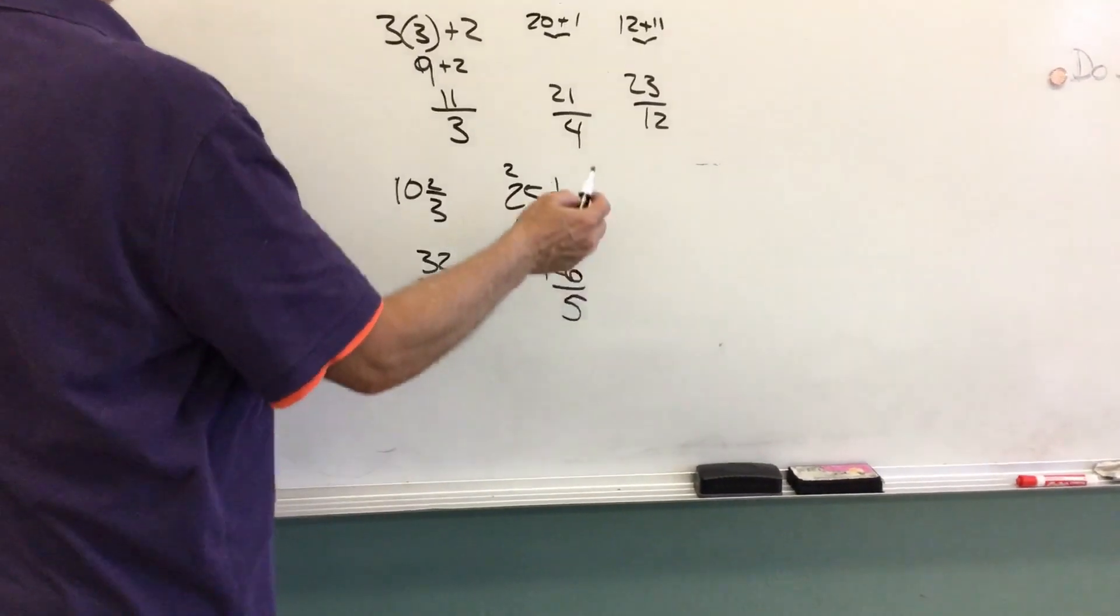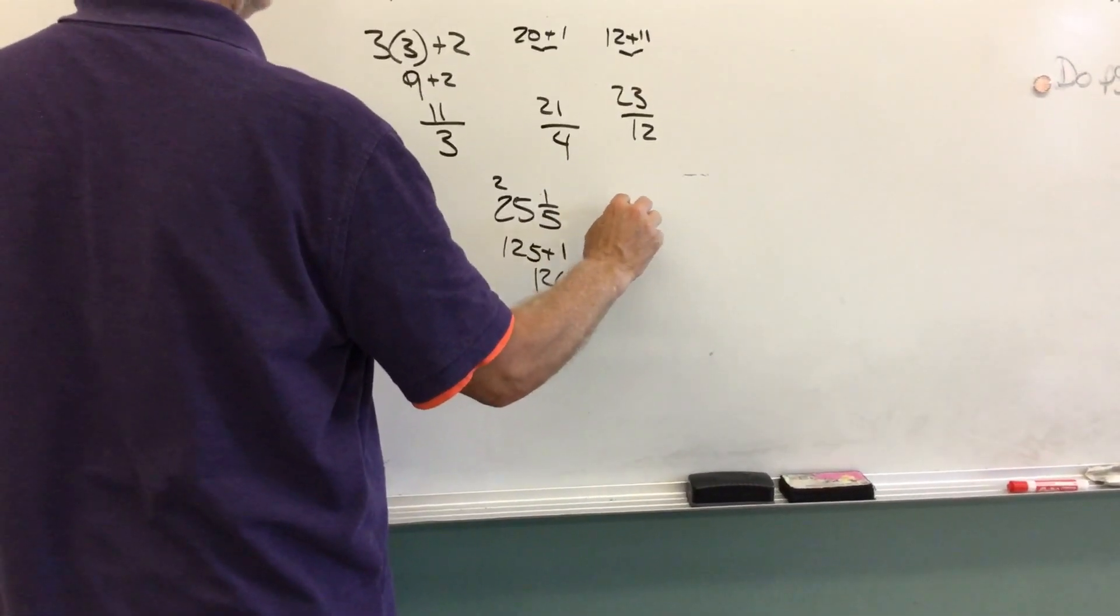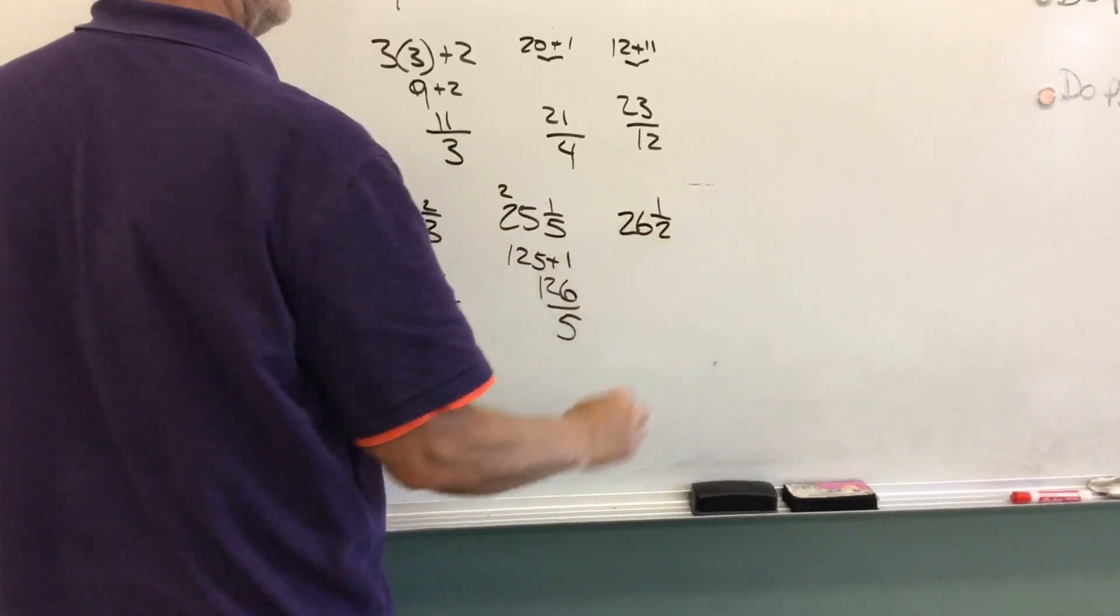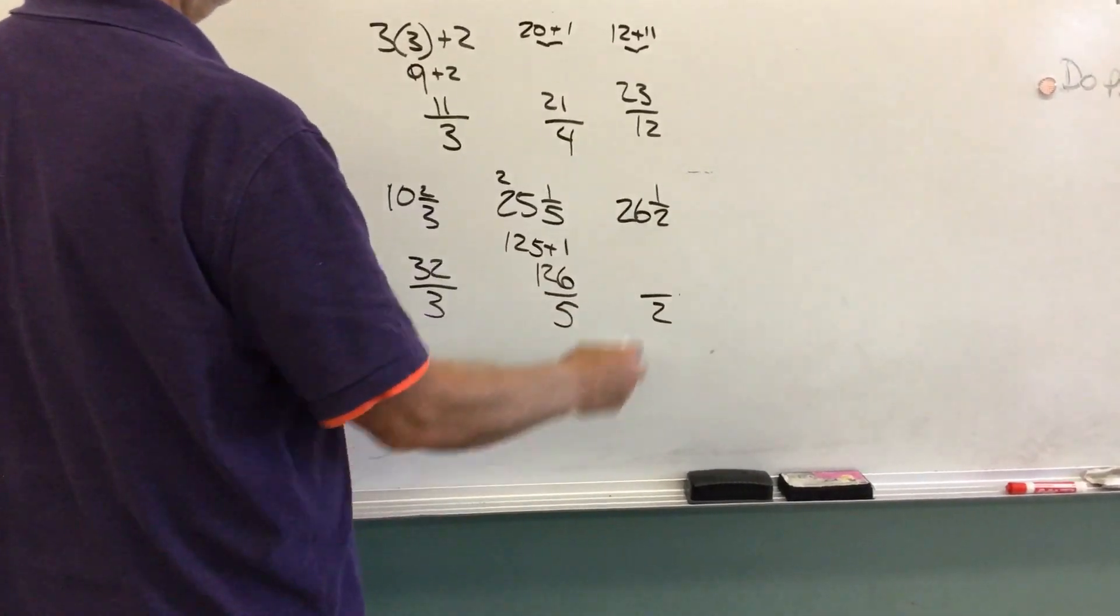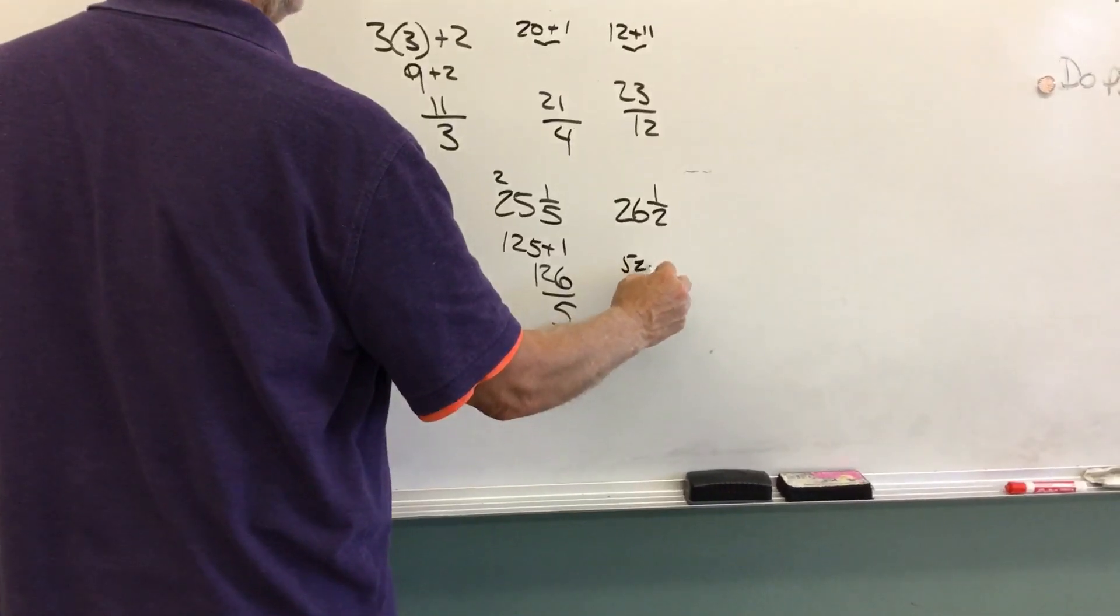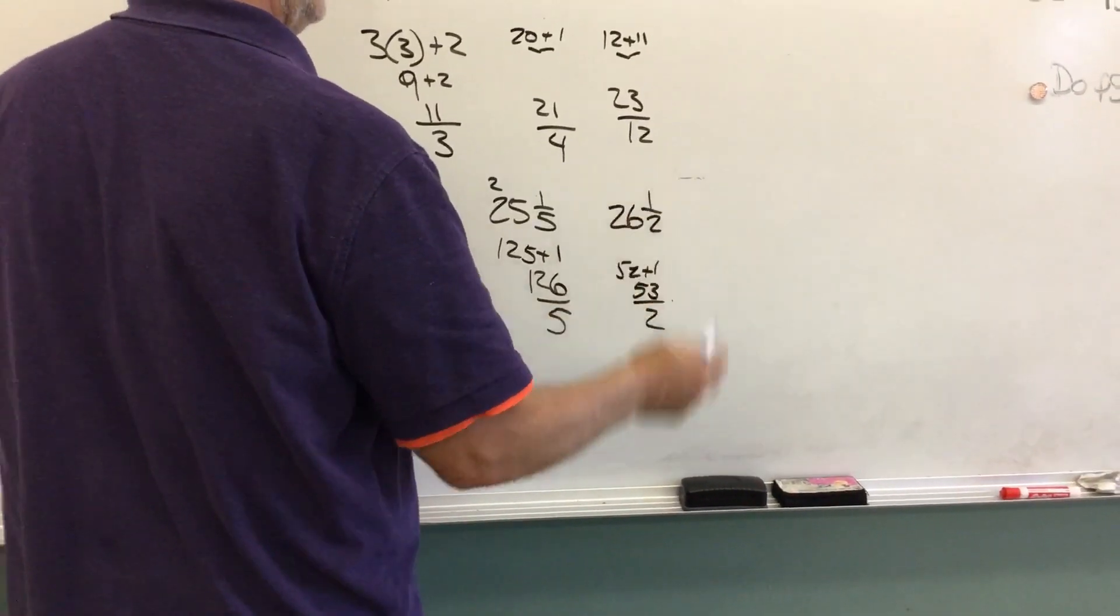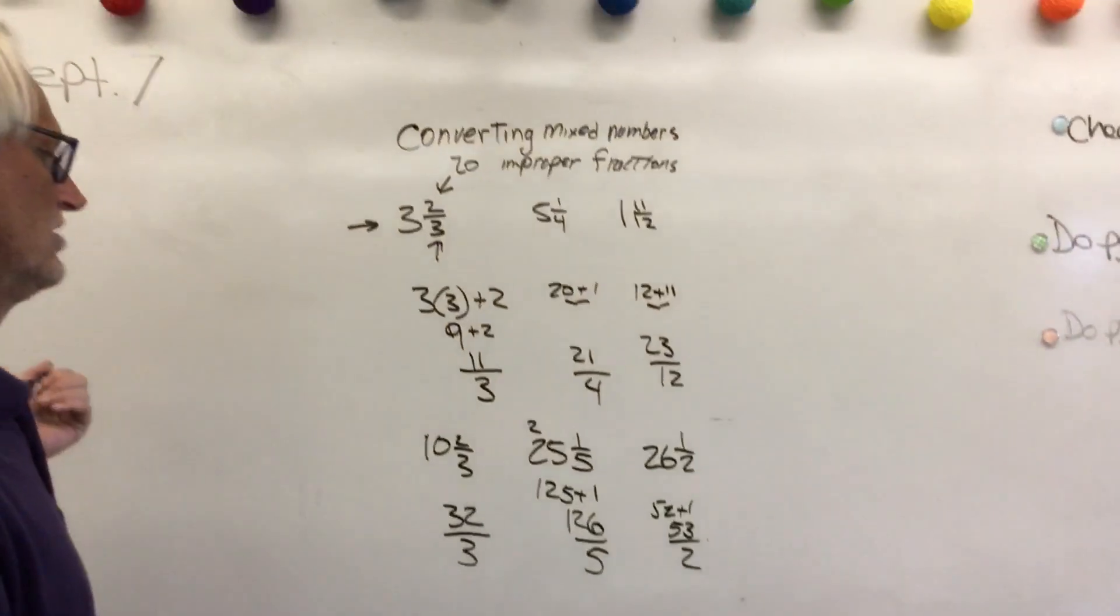And let's try one like 26 and 1 half. So the denominator, 2 times 26 is going to be 52 plus 1 is going to be 53 over 2. So that's converting mixed numbers to improper fractions.